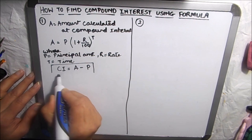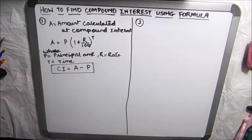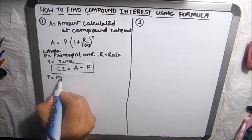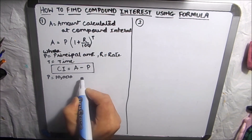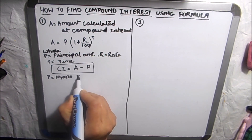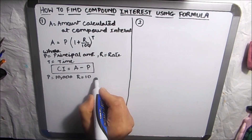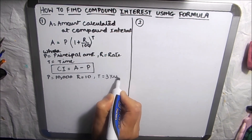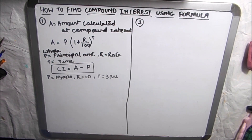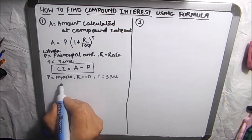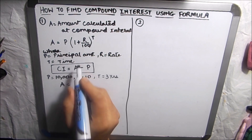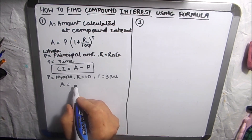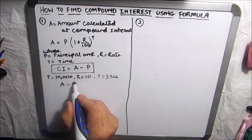Let's take an example where the principal amount is 10,000 rupees, the rate of interest is 10 percent, and the time is three years. We need to find the compound interest. First, we will find the amount using the formula P × (1 + R/100)^T. Here, P is 10,000.